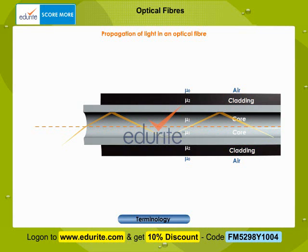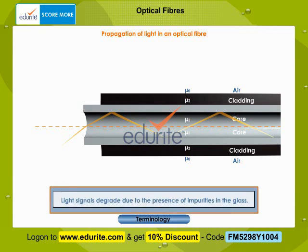However, some of the light signal degrades within the fiber, mostly due to impurities in the glass.